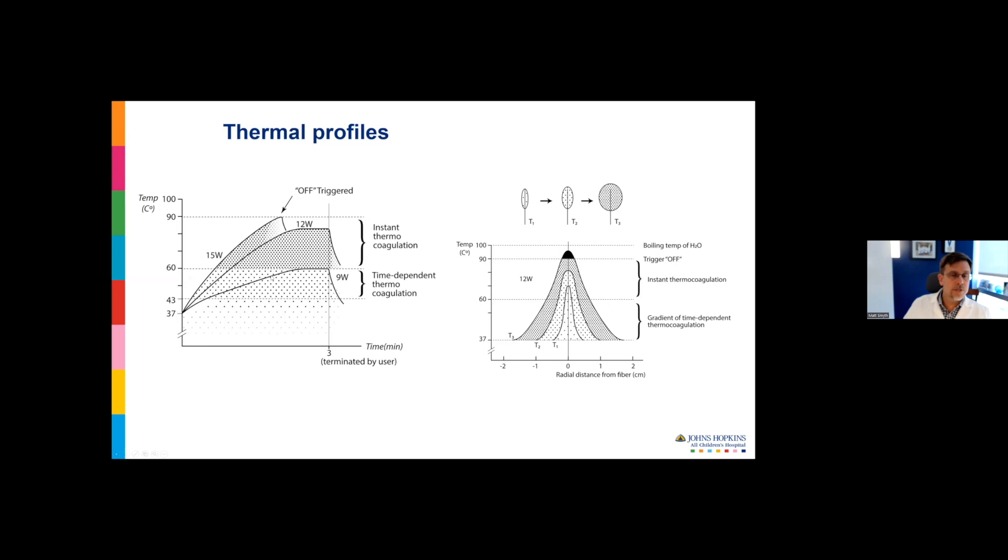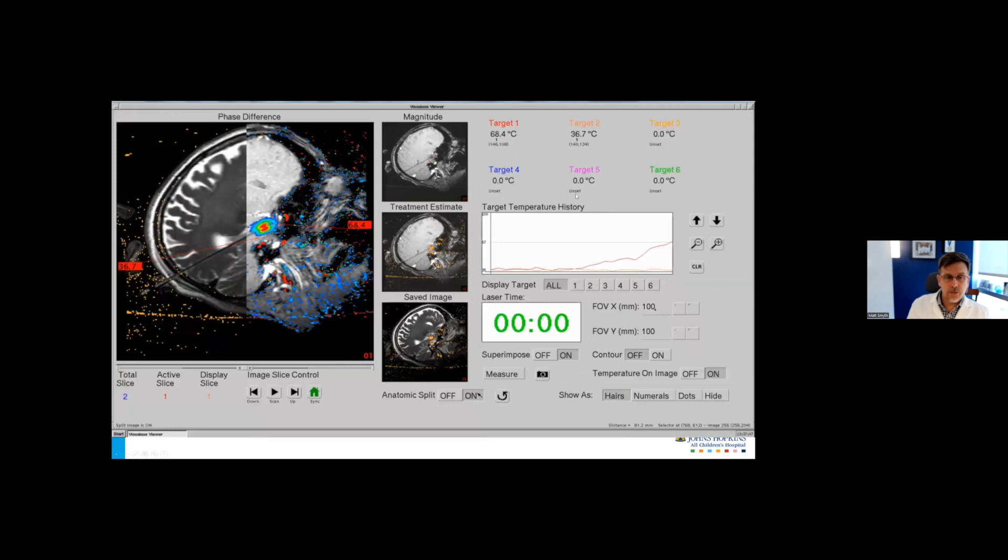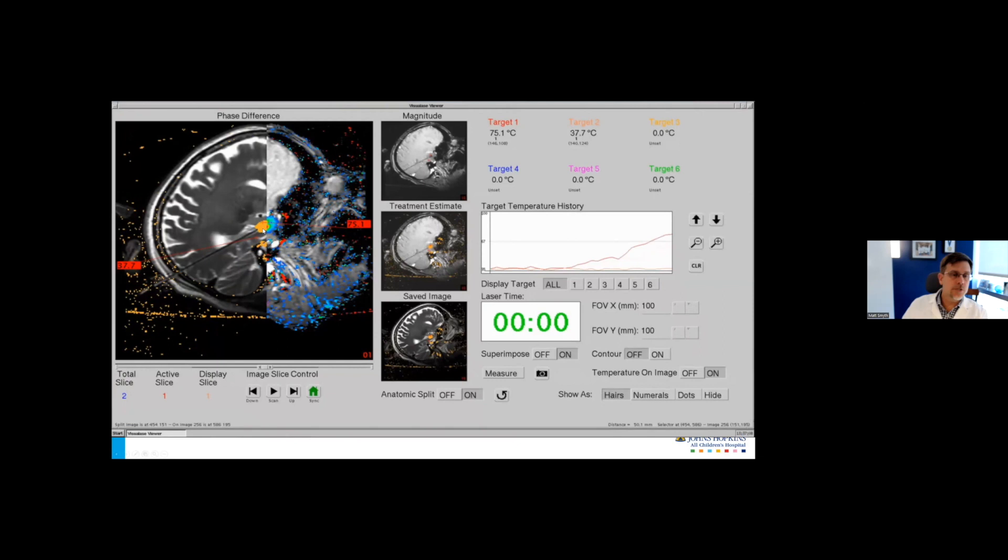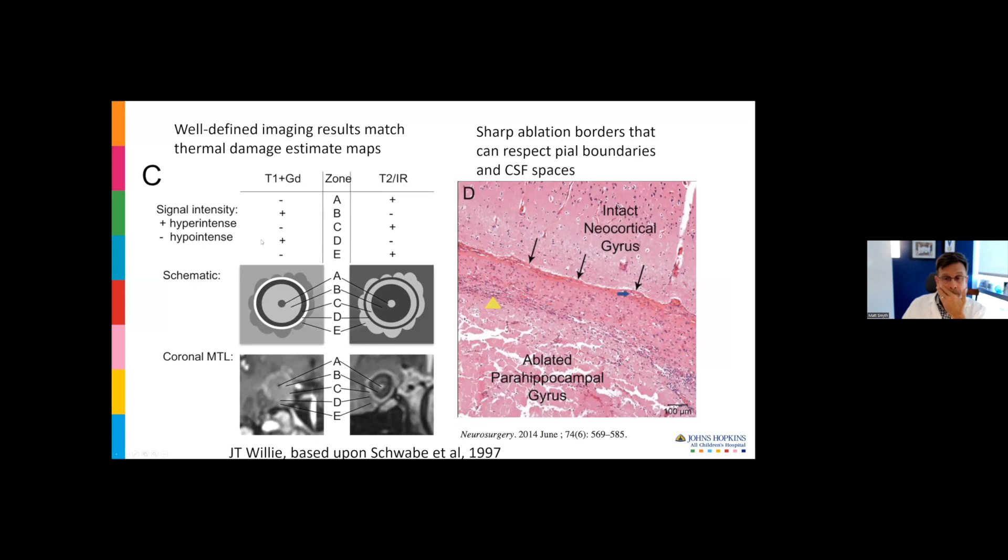Here's a screenshot from a Visualase case. You can pull this slider across to see your thermal damage estimate. One of the nice things about laser ablation is your post MRI imaging—your zone demarcating thermocoagulation and necrosis is fairly well defined. It correlates nicely with the ring of enhancement with gadolinium. On histopathology, you see a pretty sharp border for the thermocoagulation. It also tends to respect pial boundaries and CSF spaces.